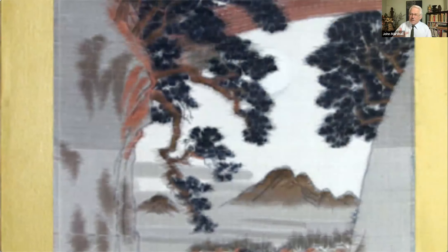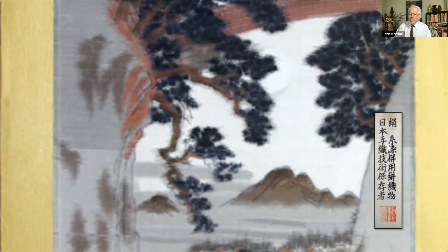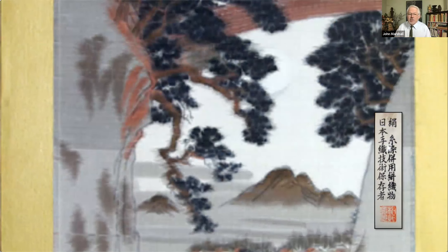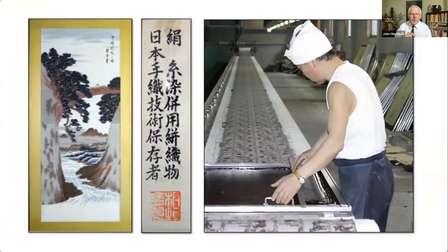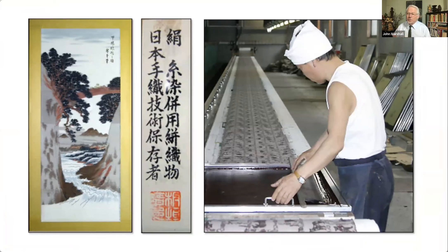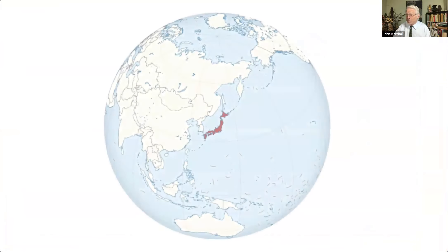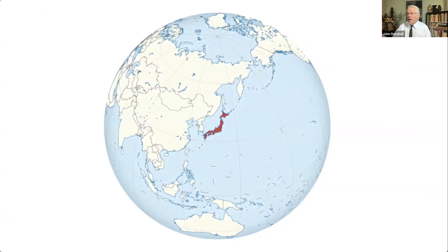This allows for a somewhat speedier process. This is an example from my collection. The label that came with it indicates that this person is a traditional meisen dyer, an ikat dyer, and this was a certification received as part of this piece when it was prepared.